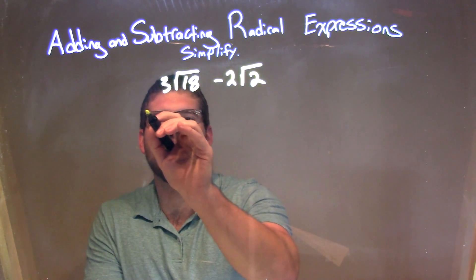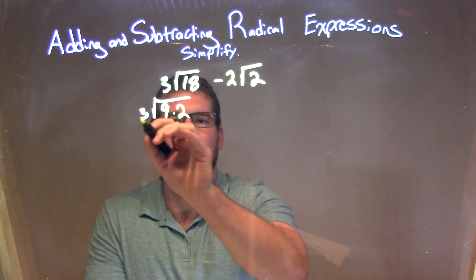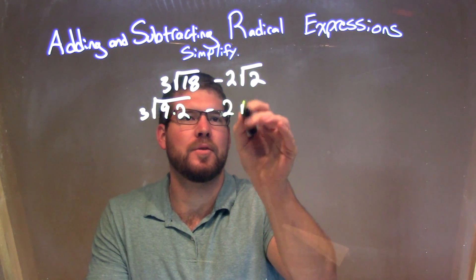Well, 18 I can break apart to be 9 times 2. So we have 3 square root of 9 times 2 minus 2 times the square root of 2.